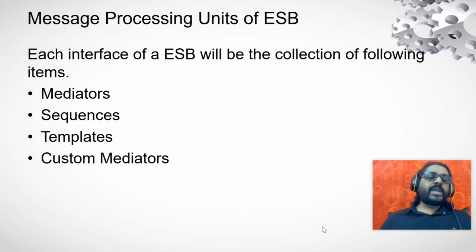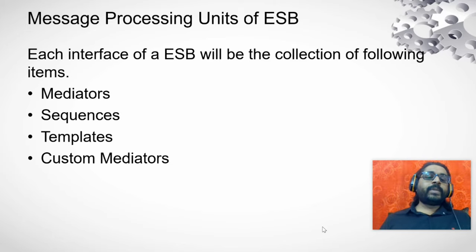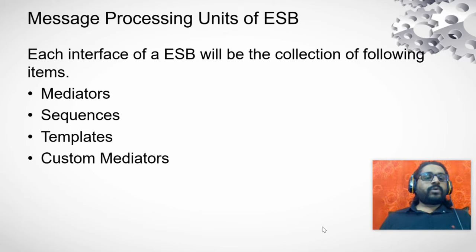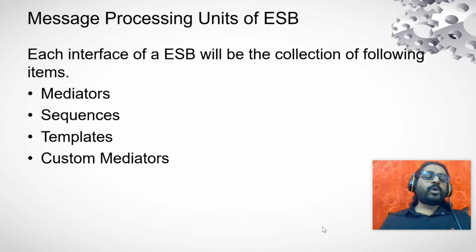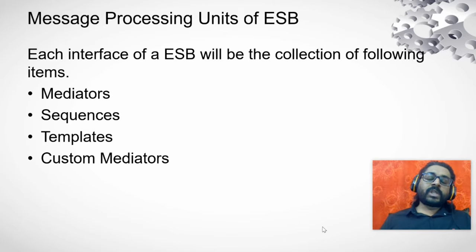For example, if three APIs share a piece of code, you can extract that code as a template and call it by passing the changing values from those three APIs. Next is a custom mediator. When you are unable to do some processing logic using the existing WSO2 mediators, you can write your own functional logic, called a custom mediator. The custom mediator is a Java class bundled as a JAR file which can be deployed into your server, giving you the capability to customize logic not available in WSO2 Enterprise Integrator.